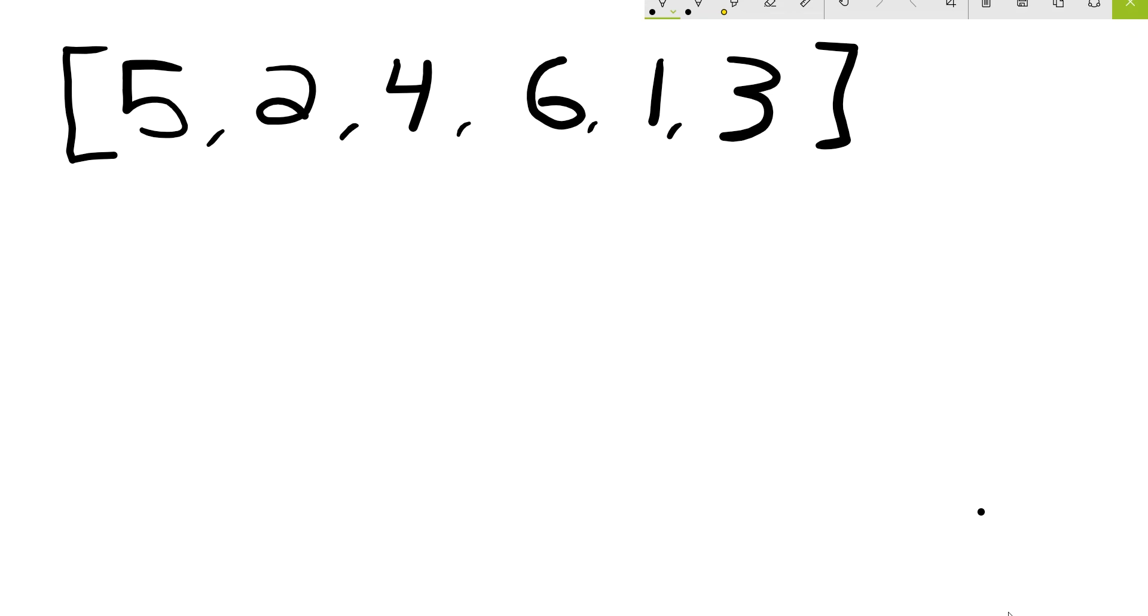So on the first iteration we look at just 5. That's just a single number so it's sorted. Next we look at 5 and 2. 2 comes before 5 so we would swap that 2 back. Now we would have a sorted 2, 5 and we look at 4.